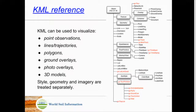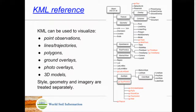KML is an excellent platform with lots of possibilities, but it has been somewhat underused — people don't use it for scientific visualization, although that might change. For geographical objects, you can visualize points, lines, and polygons without a problem. There are also ground overlays — draped images, usually JPEG or PNG — as well as photo overlays and 3D models.